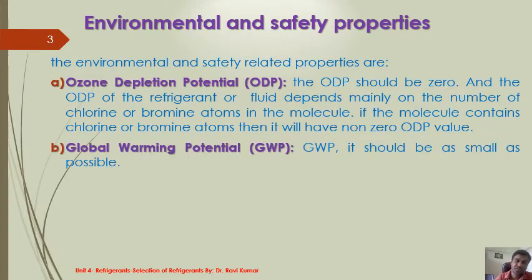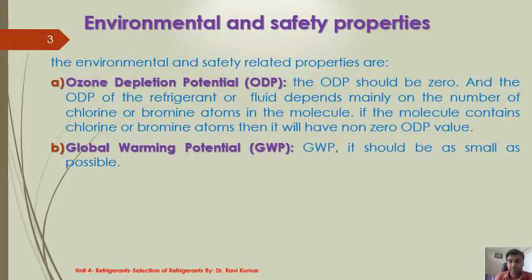The second is global warming potential, that is GWP. The GWP should be as small as possible, meaning refrigerants having high global warming potentials are not recommended. Under the mandatory protocols, several refrigerants which have a high global warming potential have come under regulated substances. High global warming potential means greenhouse effect, and global warming is an environmental issue of global scale, so it is not recommended to use refrigerants having a high GWP value.